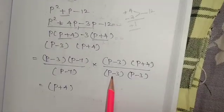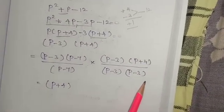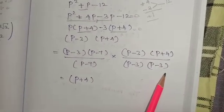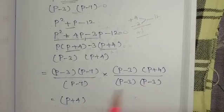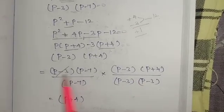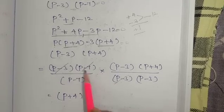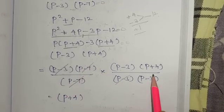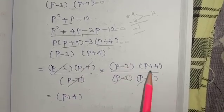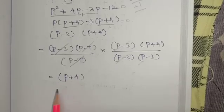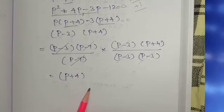So, p minus 3, p minus 3 cancel. p minus 7, p minus 7 cancel. p minus 3, p minus 3 cancel. So, this is p plus 4 is equal to p plus 4 is the answer.